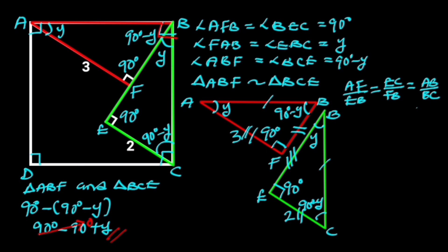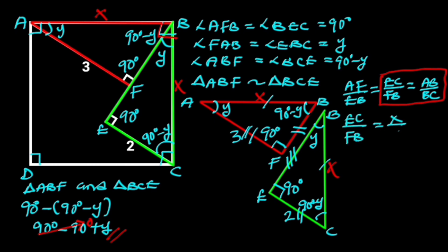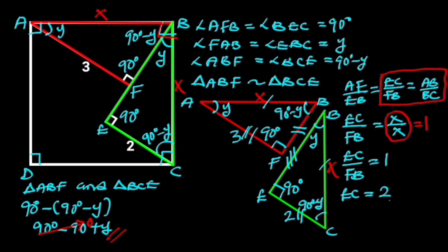Going further, we are going to focus on EC over FB is equal to AB over BC. AB is the side of the square, likewise BC. If we let X be the side of the square, it follows that EC over FB is equal to X over X, which is 1. So EC over FB equals 1. Since EC is 2, we have 2 over FB equals 1. By cross multiplication, FB is equal to 2.